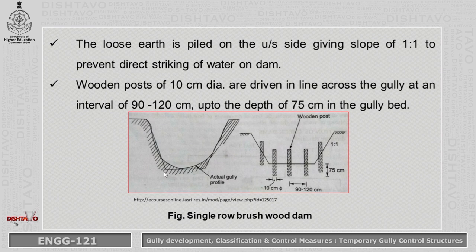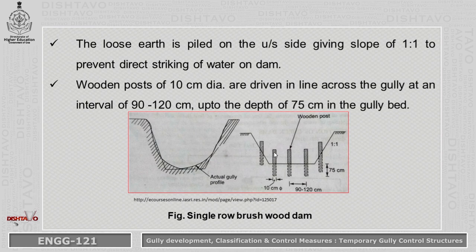As shown in this diagram, loose earth is piled on the upstream side with a 1:1 slope to prevent direct sinking of water on the dam. Wooden posts of 10 centimeter diameter are used for construction, with a distance of 90 to 120 centimeter between posts, and posts are embedded 75 centimeter into the ground.